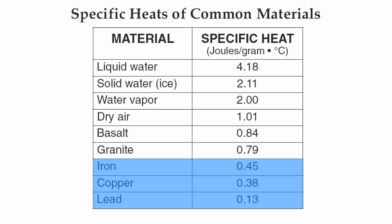Lead has the lowest specific heat of 0.13, which means it needs a very small amount of heat energy — a very small number of joules — to raise one gram of lead one degree Celsius. Metals are very good conductors of energy, so they tend to heat up very quickly and cool off very quickly as well. There's a big difference between liquid water and lead: high number means heats slowly and cools slowly; small number like lead means heats quickly and cools quickly. That's pretty much it with your specific heat of common materials — we'll talk to you soon.